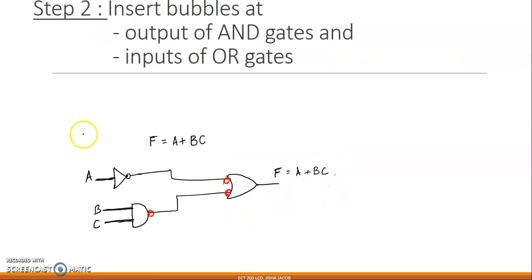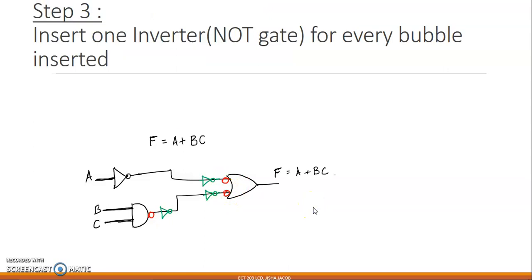Once you have obtained this circuit, start the second step: insert bubbles at the outputs of AND gates and at the inputs of OR gates. Wherever you see an AND gate, insert a bubble; wherever you see an OR gate, insert bubbles at its inputs. The next step is to insert inverters or NOT gates — for every bubble inserted, insert an extra inverter on the same wire. With three bubbles, we introduce three corresponding inverters.